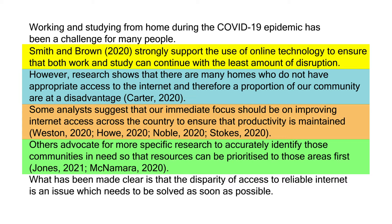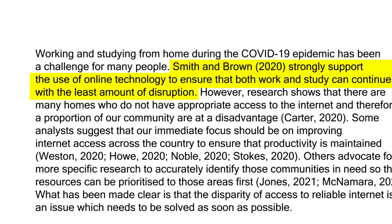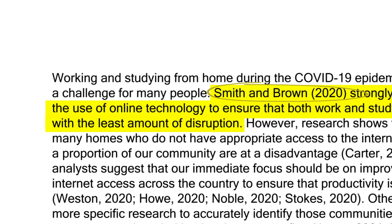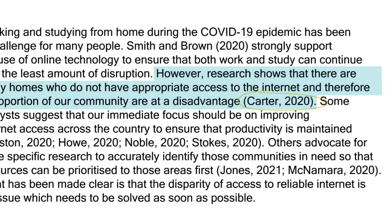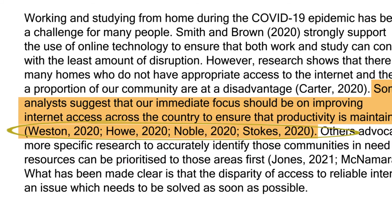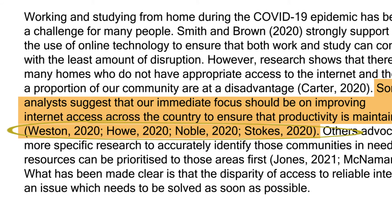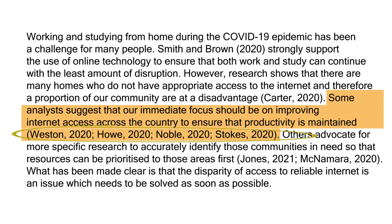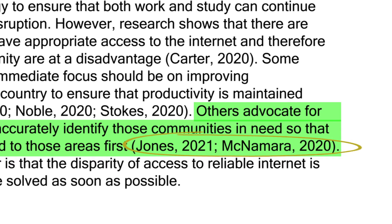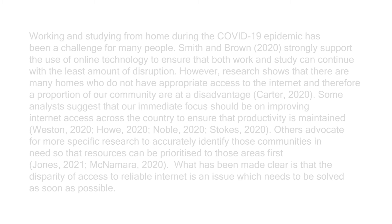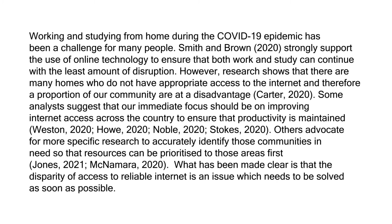It is important to realise that each supporting sentence must have an in-text reference if it provides evidence or an example of the argument. The evidence in our first supporting sentence comes from the authors Smith and Brown, who published their work in 2020. Evidence in the second supporting sentence comes from the author Carter, who published her work in 2020. Our third sentence contains evidence from four separate authors, who all published individual works on the same topic in 2020 — we note they published separate works from the way the date comes after each author. Our fourth supporting sentence includes evidence from two separate authors who both published individual works on the same topic, one in 2021 and one in 2020. Remember, each in-text reference is providing evidence only for the supporting sentence you are using it in, so if you have four sentences providing evidence, you must have four in-text references.